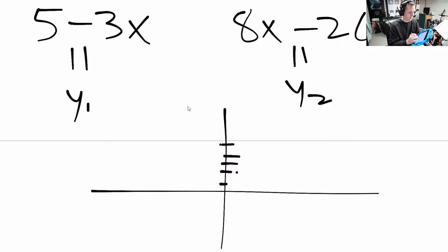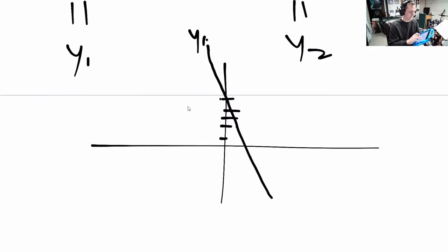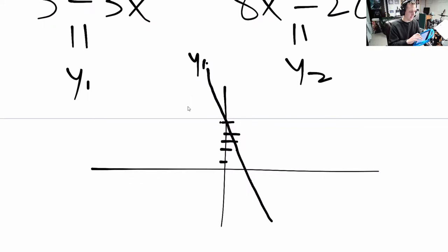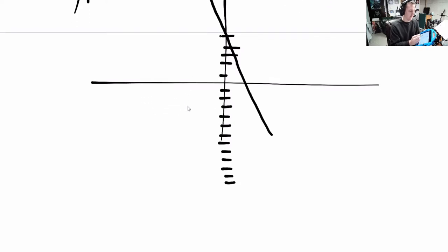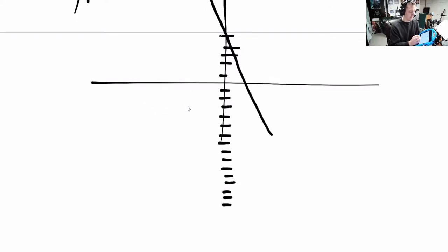So 1, 2, 3, 1. The first one looks something like this. That's y₁. 1, 2, 3, 4, 5, 6, 7, 8, 9, 10, 11, 12, 13, 14, 15, 16, 17, 18, 19, 20, right there. And a slope of 8, so it comes way up really fast.